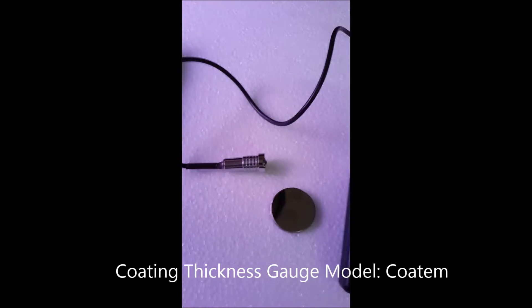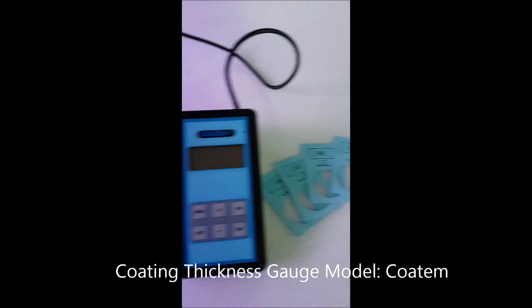This is a zero block and a cable with a probe. These are calibration strips for checking the instrument.